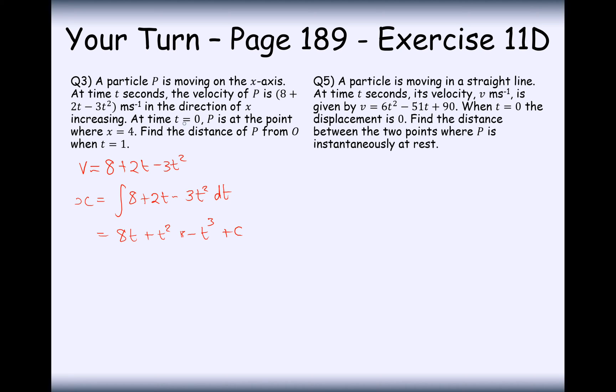We know that at time t equals 0, x equals 4. Substitute those values in and we get 4 equals c. So the function of our displacement is 8t plus t squared minus t cubed plus 4. The question is, find the distance of P from O when t equals 1. This is going to be 8 plus 1 minus 1 plus 4, which is equal to 12 meters. That's the answer, 12 meters from O.